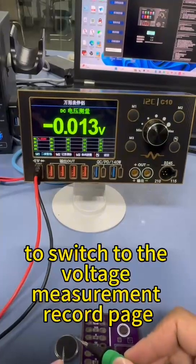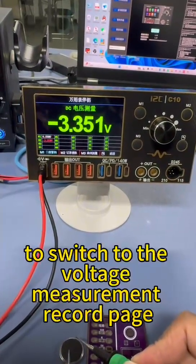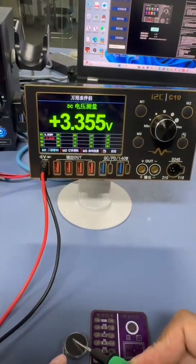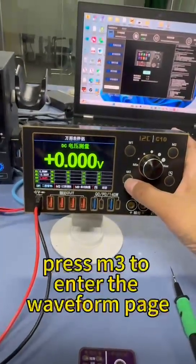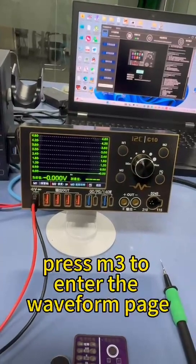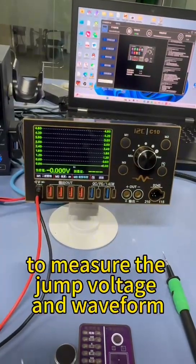Press M1 to switch to the voltage measurement record page. Press M3 to enter the waveform page to measure the jump voltage and waveform.